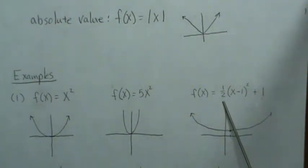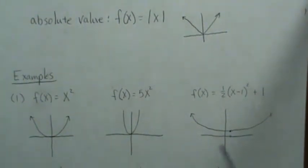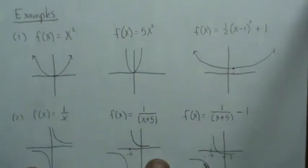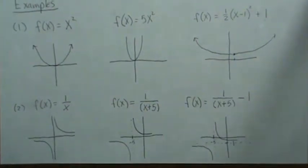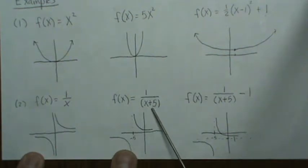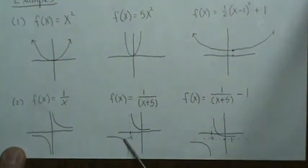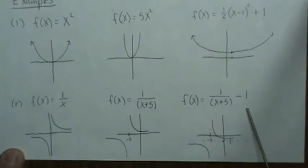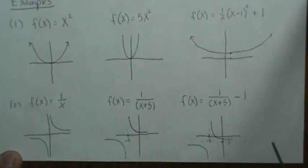For the reciprocal function, if we have x plus 5 that means shift it to the left five. Then if we subtract one, that's a vertical shift down. Those become the asymptotes and that's the graph.